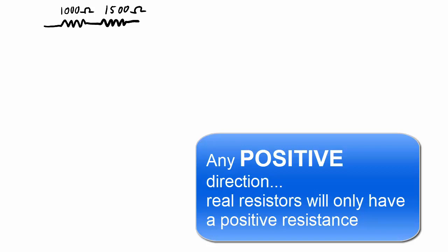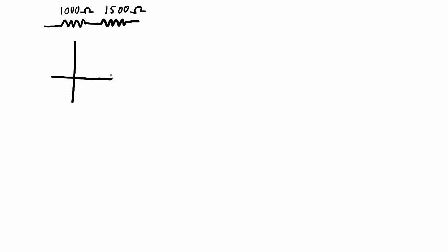To get a better understanding of these series impedances, let's take a look at some concrete examples. In this first example, I have two resistors in series with each other — one is 1000 ohms, the other is 1500 ohms. Looking at this in the real and imaginary plane, both resistor vectors are in the same direction. So I can just add these as scalar numbers and I get a total impedance of 2500 ohms, all on the real axis.